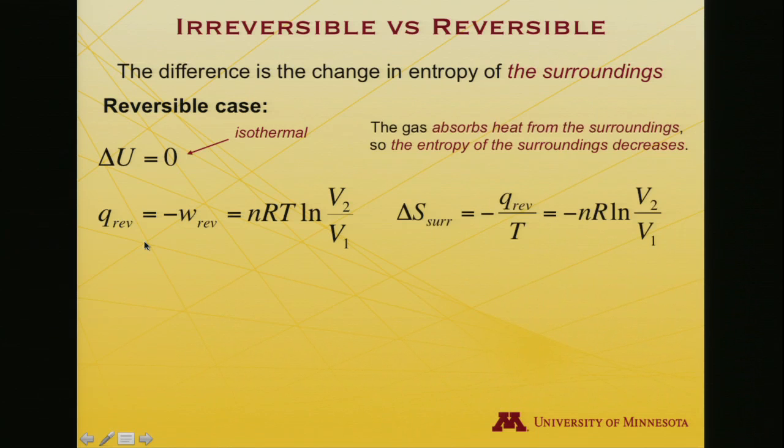And so if this was the reversible work, it's also the reversible heat. There's a sign change in there. So the gas absorbs heat from the surroundings, and the entropy of the surroundings must decrease as a result, right? Because for the surroundings, there is negative heat. It is giving up heat to the system, which is receiving it in a positive quantity. So del S surroundings is minus Q reversible over T.